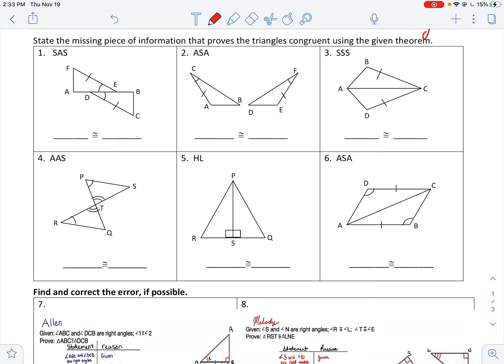Okay, now let's talk about the missing piece of information we need to prove that the triangles are congruent using the given theorem.